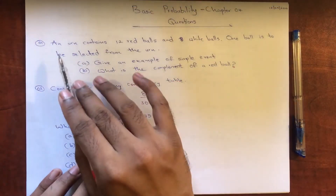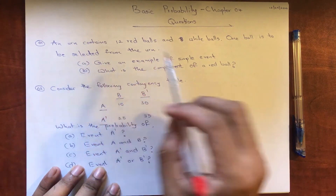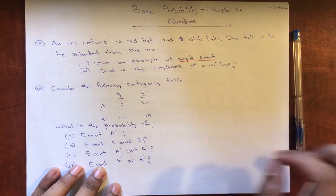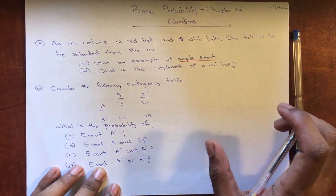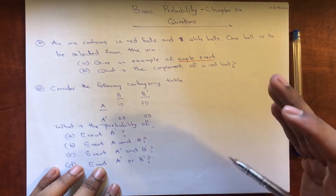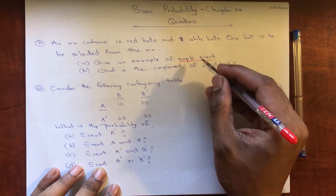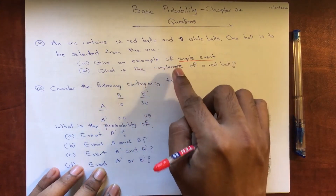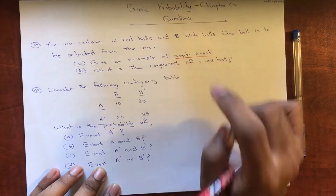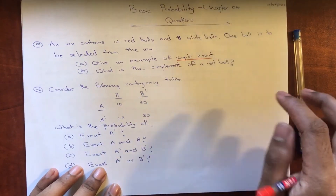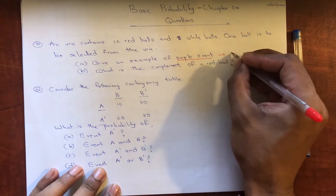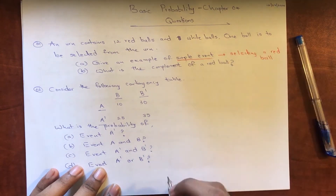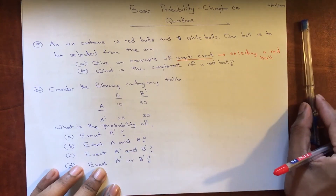So let's answer question 1. The first question asks us to give an example of a simple event. An event is each possible outcome of a variable. A simple event is an event described by a single characteristic. So the best example we can give here is selecting a red ball — that could be described as a simple event.